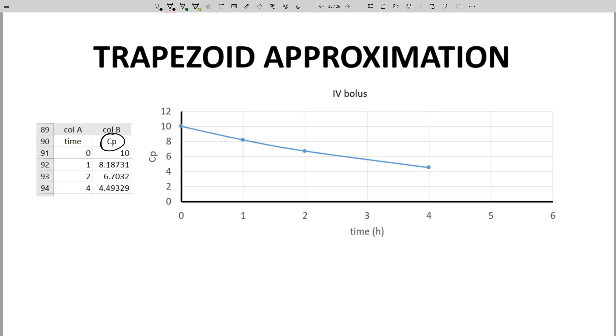The trapezoid approximation estimates each region between the points as a trapezoid. The area for each trapezoid is the average value of the bounding points multiplied by the time interval between the points.